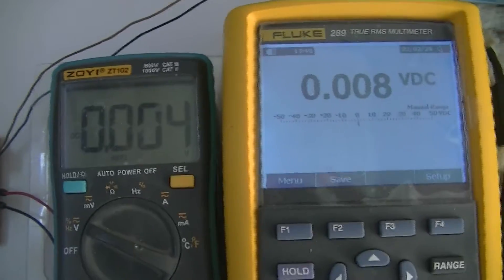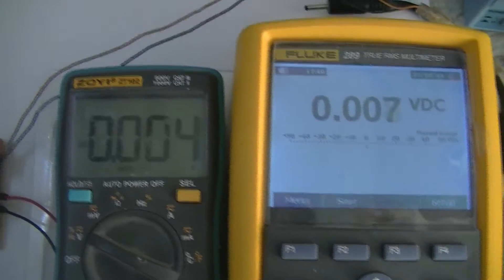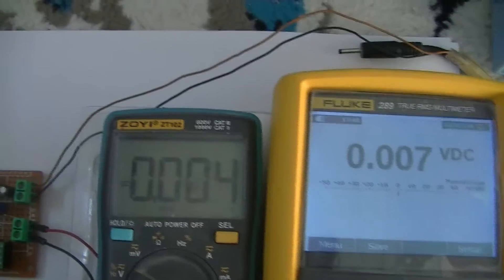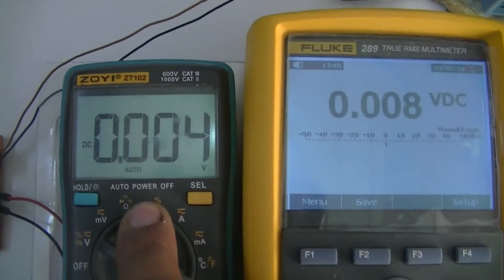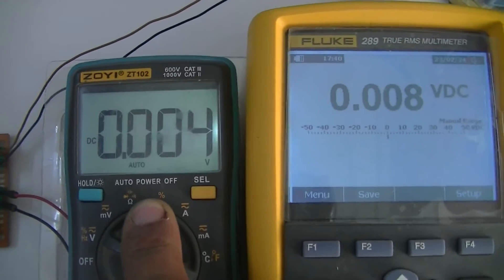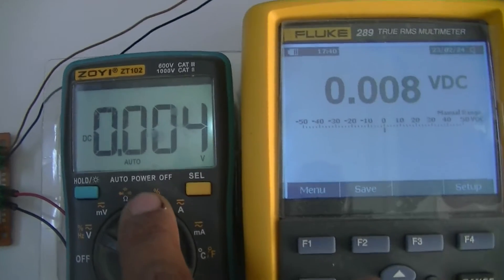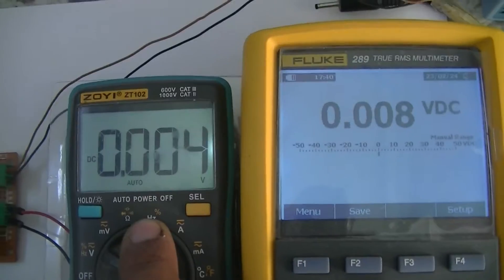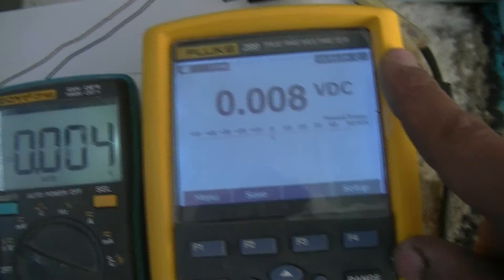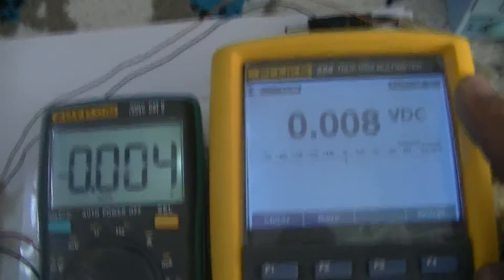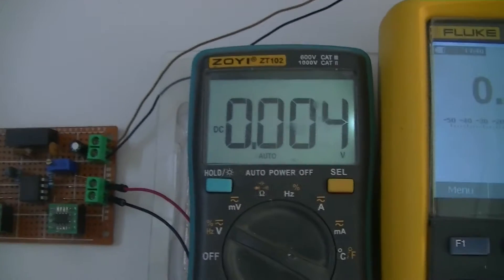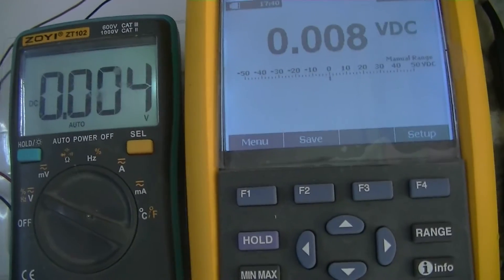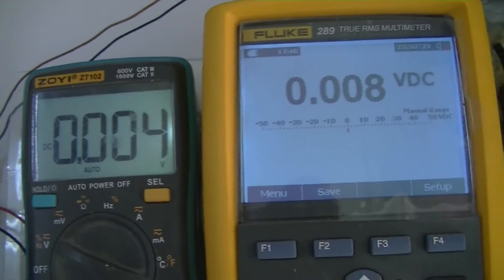I am going to increase the input signal voltage and see what happens. This multimeter is connected to the input signal to measure the input voltage, and this multimeter is used to measure the output signal voltage. Now let's increase slightly the input voltage.